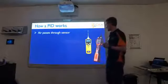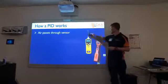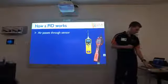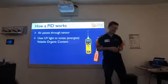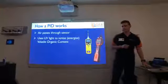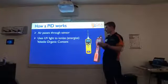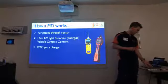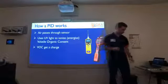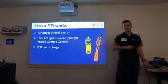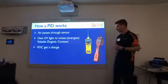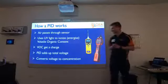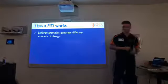So how does a PID work? There are various sensors — this one has a flexible hose, this one has just a tip at the top. Air passes into the sensor. Within the machine itself, it essentially shoots UV light at the air passing through. What that does is it hits the volatile organic content — the VOC — that's the stuff we're interested in. That stuff gets a charge, and the PID counts up all those charges and comes up with a final reading.